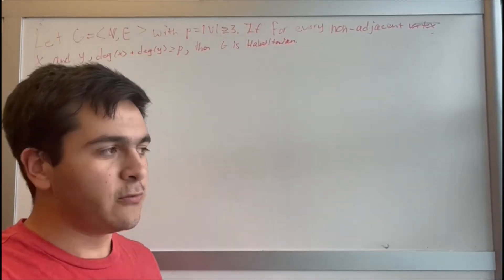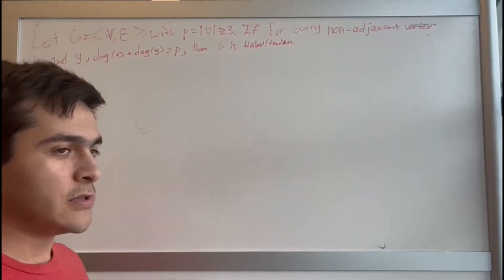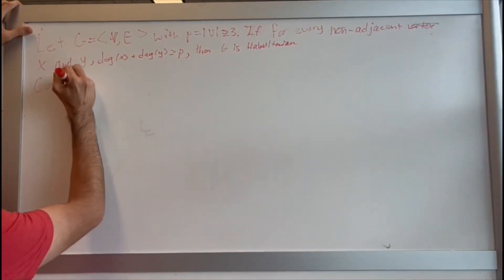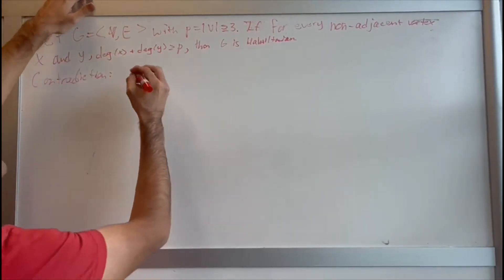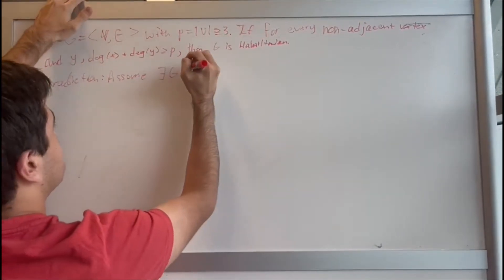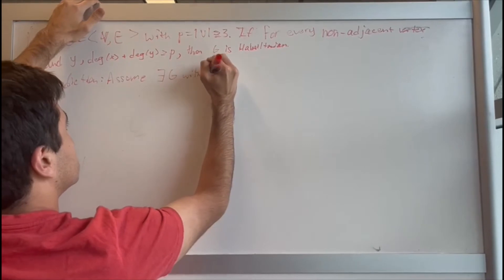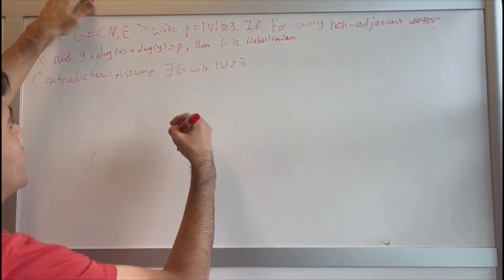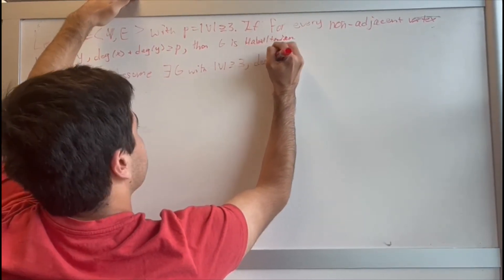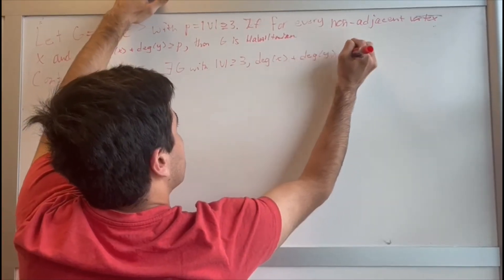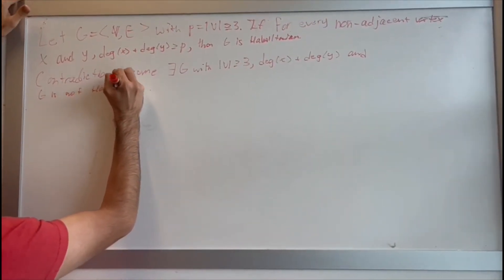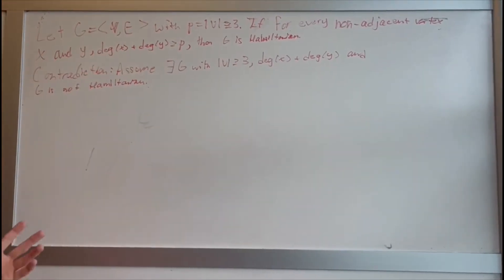We'll use a proof by contradiction — assume the negation of what we want to prove is true and show why it doesn't make sense. So we assume there is a graph with at least three vertices, where for all non-adjacent vertex pairs x and y in g, the degree condition holds, but g is not Hamiltonian. We assume the opposite is true and show why it's a contradiction.